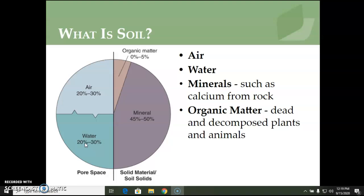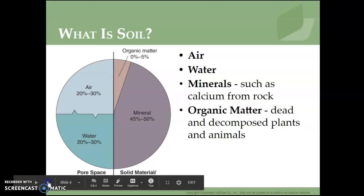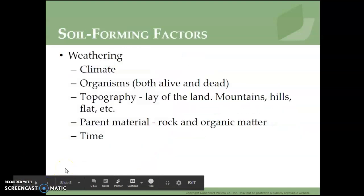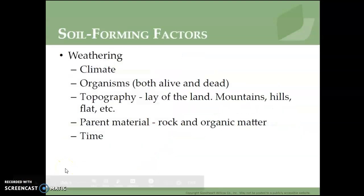Variations of these components give soil its physical, chemical, and biological properties. Five soil forming factors shape the development of soil. These factors are the reasons soil differs from the top to the bottom of a hill, or why soil found on a beach has different characteristics from the soil found in a wetland or farm field.